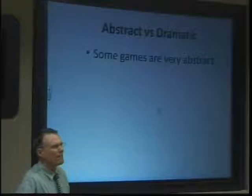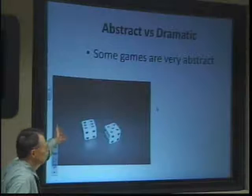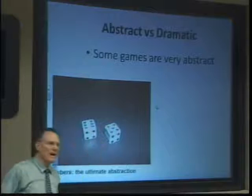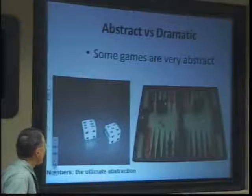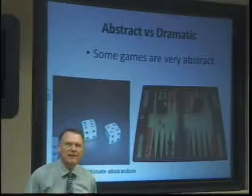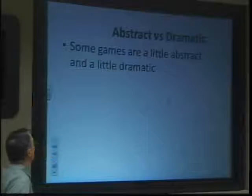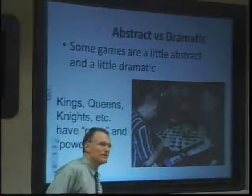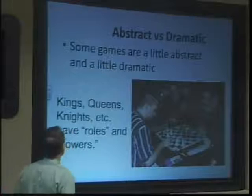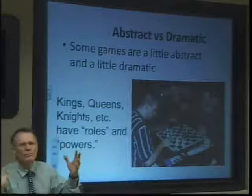Some games that you are very familiar with — the earliest games in human existence — are very abstract, like just rolling dice. Numbers are pretty much the ultimate in abstractions. Backgammon uses positions, which are a little bit less abstract than mere numbers. Then there are some games that are a little abstract and a little dramatic, like chess. Chess uses positions and rules for movement and capture that are kind of abstract, but it has kings, queens, knights, etc., that have roles and powers, which makes them a little bit dramatic.